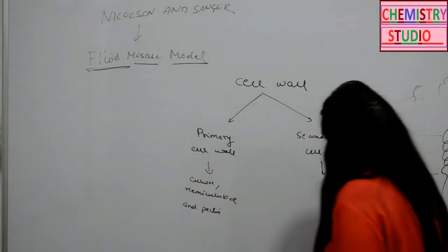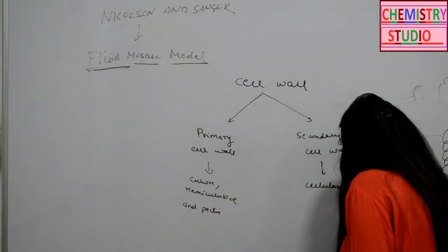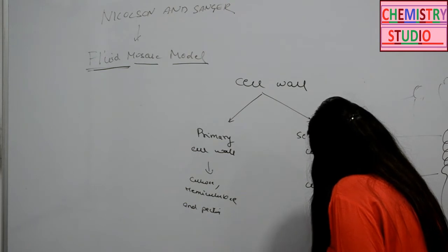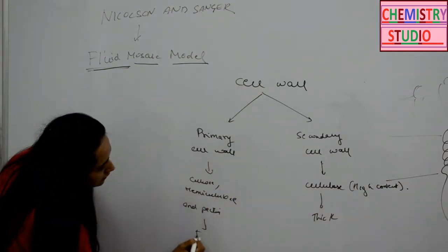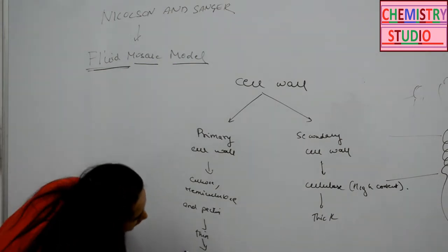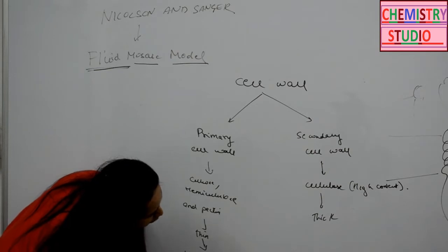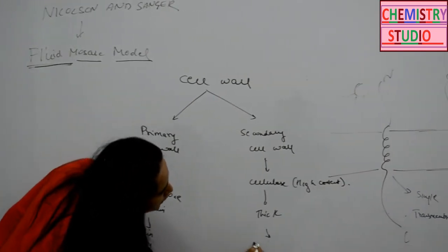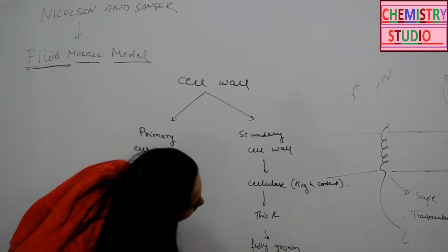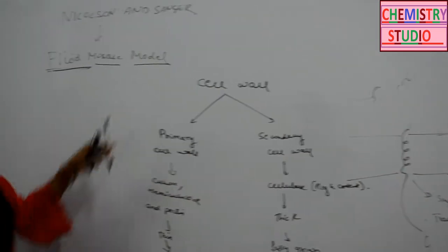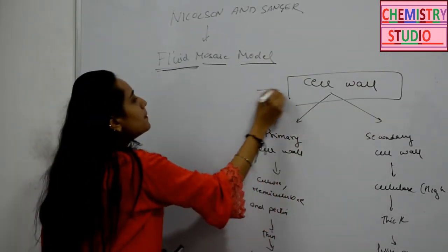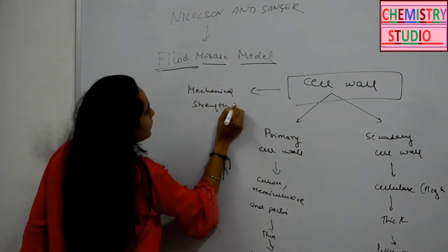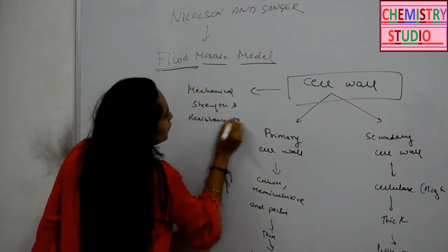Whereas the secondary cell wall is also made up of cellulose but has a high content of cellulose and is thick. The primary cell wall is thin and is present in growing or younger plants and growing cells. The secondary cell wall is present in fully grown cells. The basic function of the cell wall is to provide mechanical strength and resistance to the plant cell.